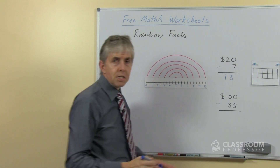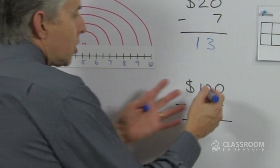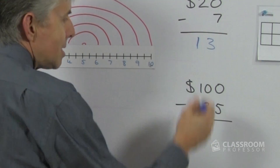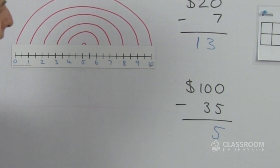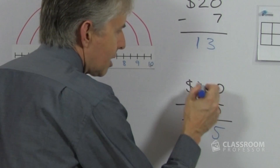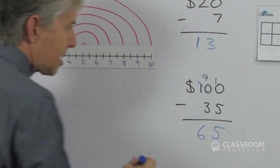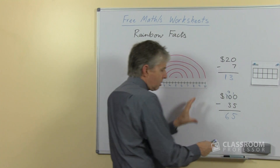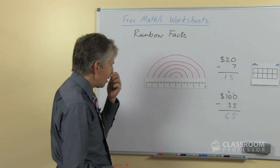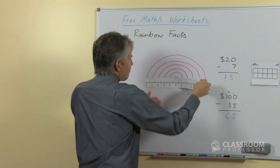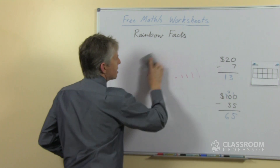We can extend this even further for larger numbers, like 100 take away 35. The first part of this question will be 10 take away 5, which is 5 — and there's a rainbow fact. Then there are some tricky extra bits: we're going to have to do 9 take away 3 is 6, but even that is based on the idea of a collection of 10 that we're taking away from. So there are a couple of applications for the rainbow facts.